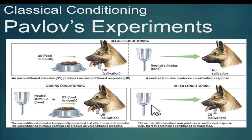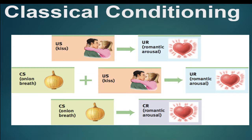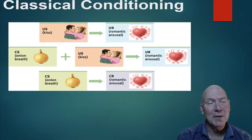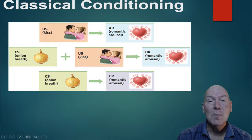Physiological responses can be classically conditioned. For example, a kiss produces romantic arousal — that's an unconditioned response. If your partner has eaten a strong onion sandwich, the onion breath is a neutral stimulus. But if the onion breath is paired with a kiss enough times, through acquisition the onion becomes a conditioned stimulus that elicits romantic arousal as a conditioned response. This may explain many unusual associations or fetishes that develop innocently.